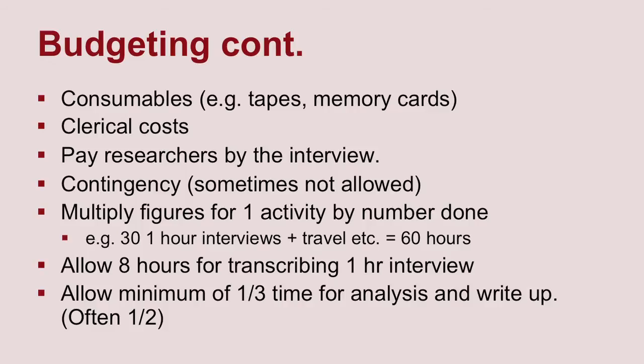Another thing to think about when estimating is that it always takes longer than you think to do things. A common way to estimate is to work out how much one unit costs and multiply up. If you're doing 30 one-hour interviews, that's 30 hours, but you also have to allow time for travel — maybe an extra hour each — so it becomes 60 hours. Then allow a bit extra, perhaps 50% on top, for things going wrong: trains breaking down, snow and ice stopping travel.